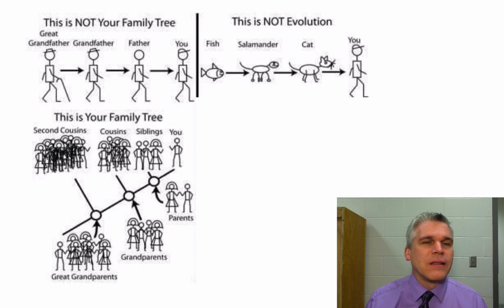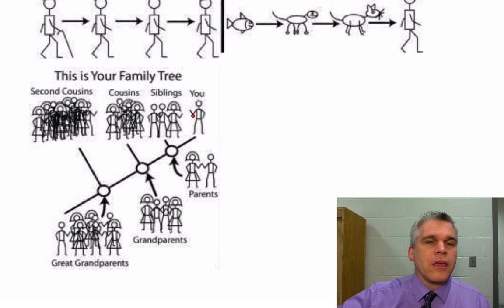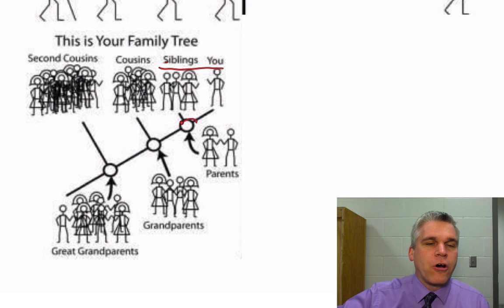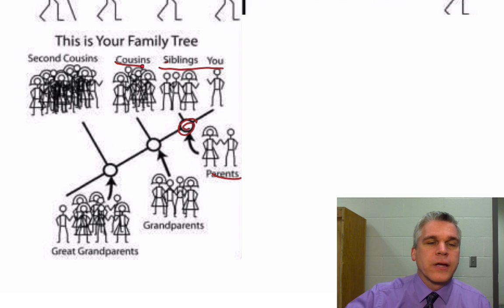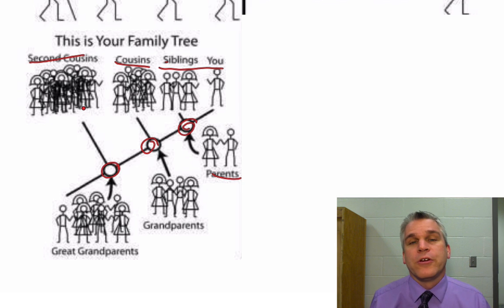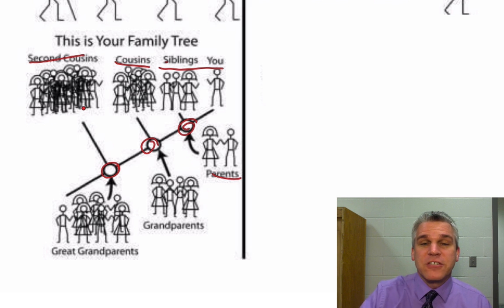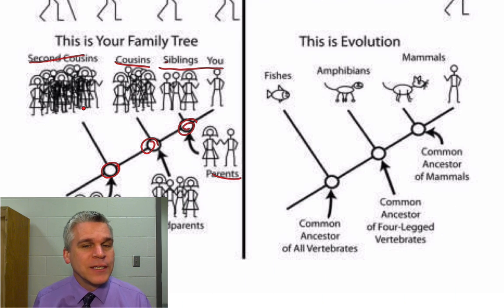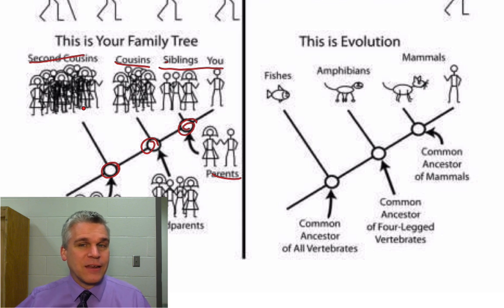This is more like what our family tree actually looks like. You and your brothers and sisters all have a common ancestor — your parents. You and your cousins all have a common ancestor — your grandparents. You and your second cousins have a common ancestor — your great-grandparents, and so on. This is more how a family tree is, which is also how evolution is: there wasn't direct evolution from a fish to a salamander to a cat to us, but we did have some common ancestors.